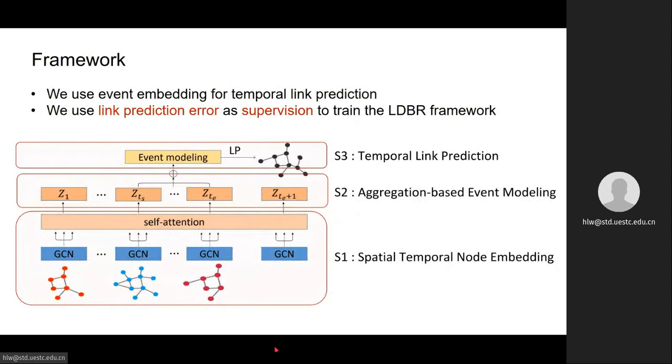This is the framework of the proposed LDBR model. It has three steps, and you can find the details in our paper. Note that because we don't have real-time labels in most of the real-world datasets, so we use link prediction errors to train this LDBR model.